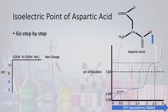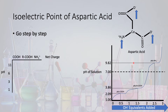The pKa of the carboxylic acid on aspartic acid is 2.09. So if we titrate aspartic acid, we observe this titration curve with a flattening right at 2.09. The pKa of the R group carboxylic acid is at 3.86, so this is where our next flattening of the titration curve occurs. The last pKa, or last flattening of our titration curve, occurs at a pH of 9.82 — that's the pKa of our quaternary amine.